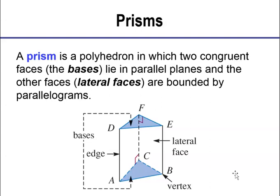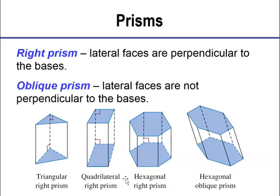Let's define a prism. A prism is a polyhedron in which two congruent faces — called the bases, shown in blue in our diagram — lie in parallel planes. The other faces, called the lateral faces shown in white, are bounded by parallelograms. A prism doesn't have to have a triangle as its base — it could have lots of different figures as its base, but we have rectangles as the sides. You might think about the piece of glass or crystal used to capture light and shoot out a rainbow — that is the shape of that kind of prism, but there are other kinds.